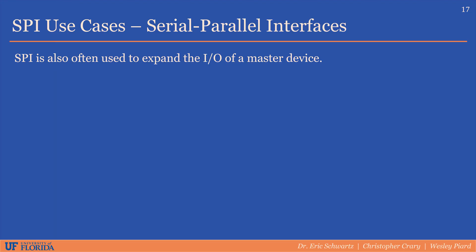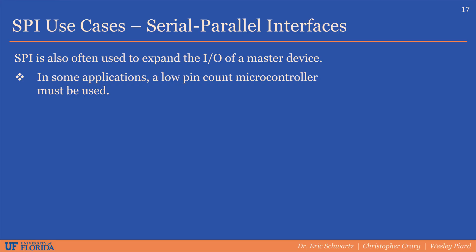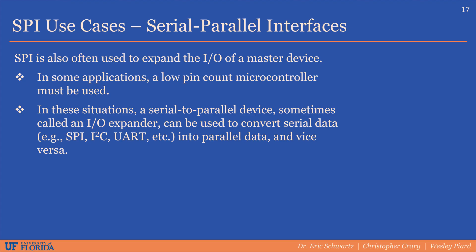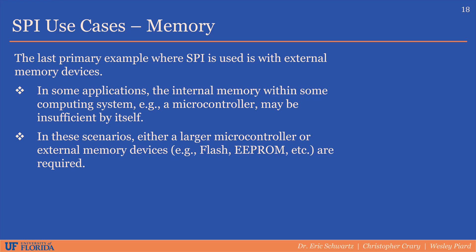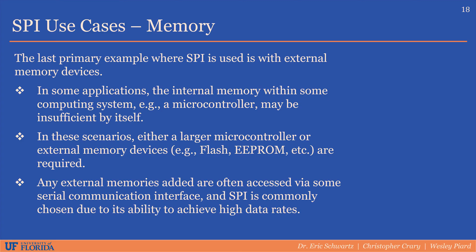SPI is commonly used to increase the number of I/O signals a master device can handle. For example, if an application requires a microcontroller with a low pin count, a device that translates between serial and parallel data — commonly referred to as an I/O expander — can be used. This parallel data can then be used as normal I/O pins while only using a few microcontroller pins for serial communication. These devices internally act as shift registers. Additionally, when internal memory is insufficient, external memory devices accessed via SPI are commonly employed because of its high data rates.